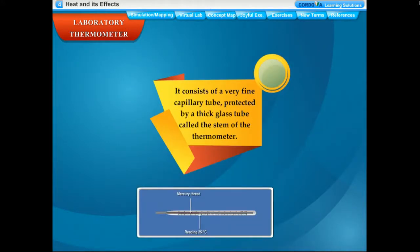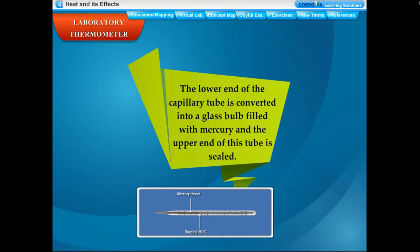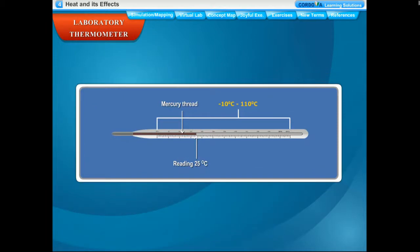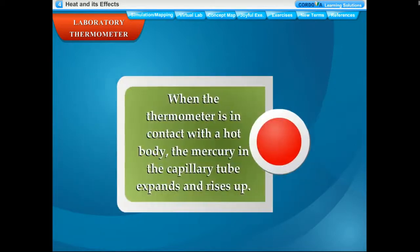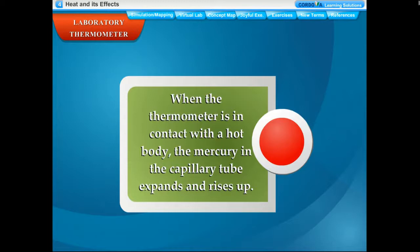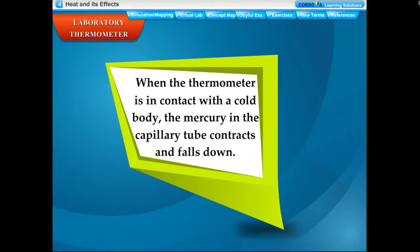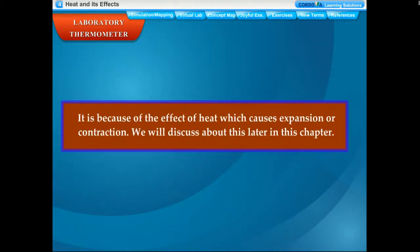A laboratory thermometer consists of a very fine capillary tube protected by a thick glass tube called the stem. The lower end of the capillary tube is a glass bulb filled with mercury, and the upper end is sealed. The stem is marked in degree Celsius or degree Fahrenheit. Commonly used laboratory thermometers have a range from −10°C to 110°C. When the thermometer is in contact with a hot body, the mercury expands and rises up; with a cold body, it contracts and falls down.